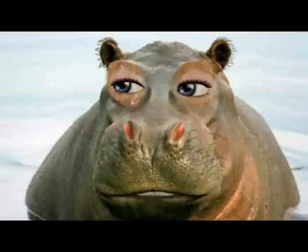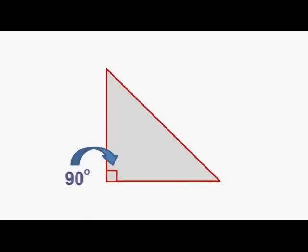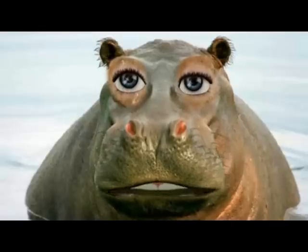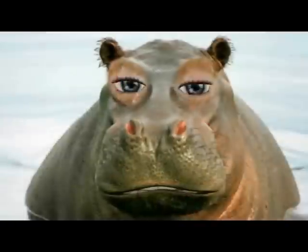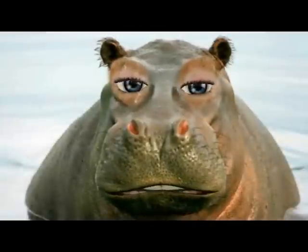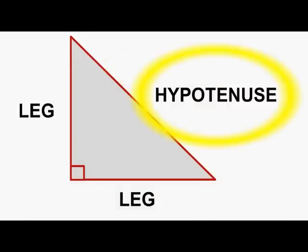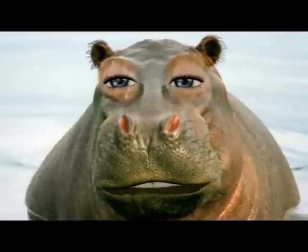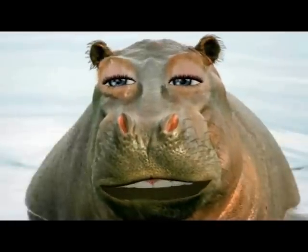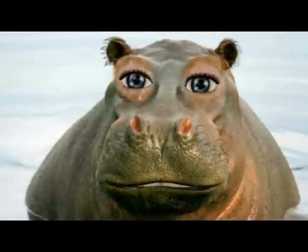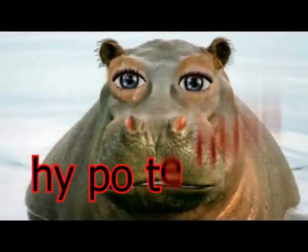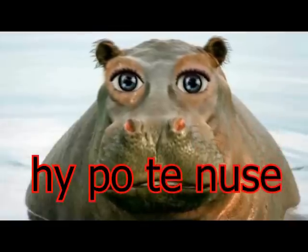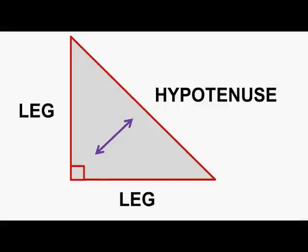Let's see. A right triangle has one angle that equals 90 degrees. It has two legs and a hypotenuse — I mean hi-potenuse, which is the biggest side. It's like a hippopotamus because it's big, but it's called a hypotenuse. If you look closely, you'll see the hypotenuse is opposite of the right angle.